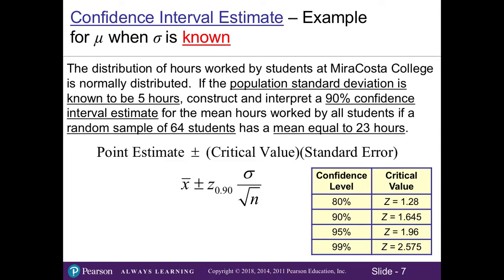Let's look at an example. The distribution of hours worked by students at MiraCosta College is normally distributed. If the population standard deviation is known to be 5 hours, construct and interpret a 90% confidence interval estimate for the mean hours worked by all students if a random sample of 64 students has a mean of 23 hours. Let's break this down. Here's our general format for a confidence interval estimate. Our point estimate, x-bar, our sample mean, is 23 hours.